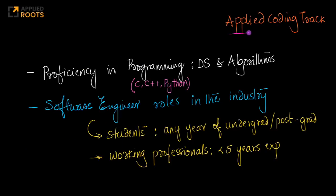In this Applied Coding Track course, we will focus on these three programming languages: C, C++, and Python, along with data structures and algorithms that are relevant in the industry. This course itself will help you prepare for software engineer roles in the industry and is suitable both for students and working professionals.